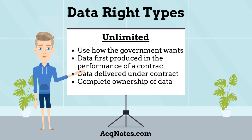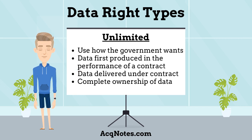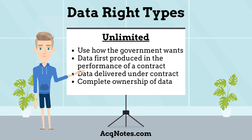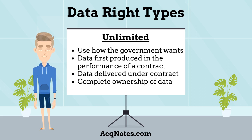The first data right type is unlimited data rights. Unlimited data rights means the government can use, disclose, reproduce, prepare derivative works, distribute copies to the public, and perform publicly and display publicly, and to permit others to do so. Basically, this means the government has complete ownership of the data and can do with it what it wants.